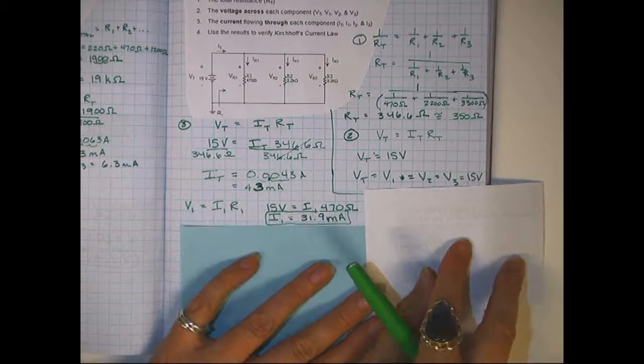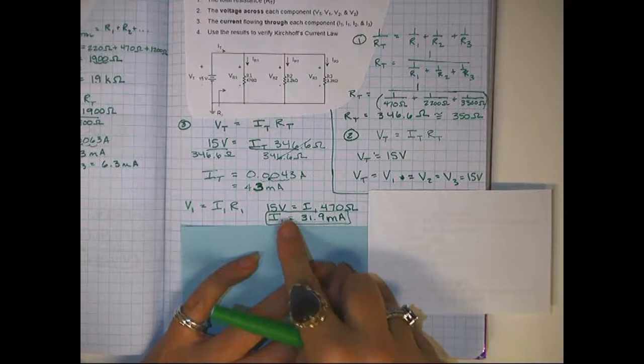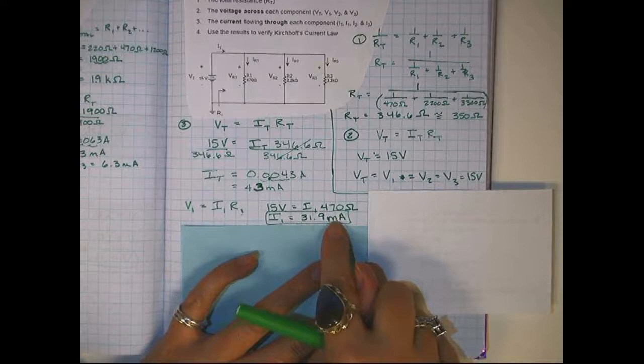Remember, you're going to divide just like we did up here, and get this. You're going to actually get 0.031, and then move it over to make milliamps out of it.